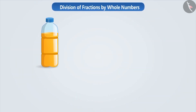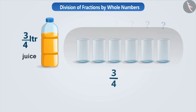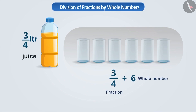Suppose this bottle contains three-fourth litre of juice. If it has to be divided equally among six children, then how much juice will each child get? To find this, we have to divide three by four by six.